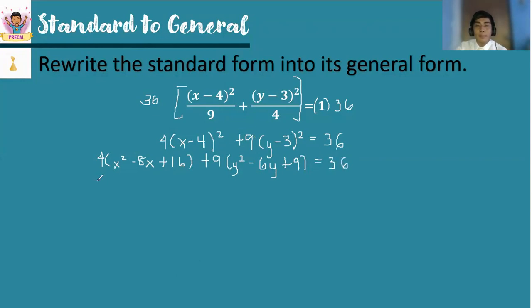Now let us simplify by applying the distributive property. So we have 4x² - 32x plus 4 times 16 is 64 plus 9y² - 54y. And 9 times 9 is 81 minus 36 = 0. So I already transposed 36 onto the other side.